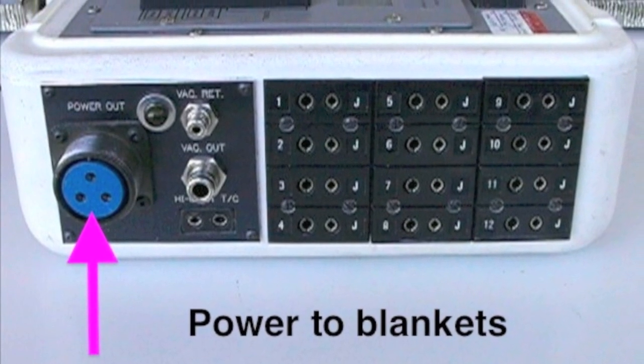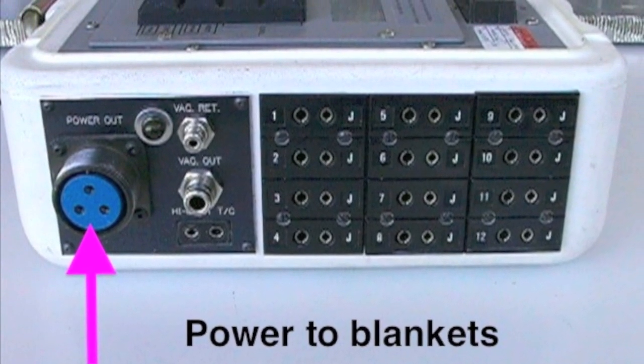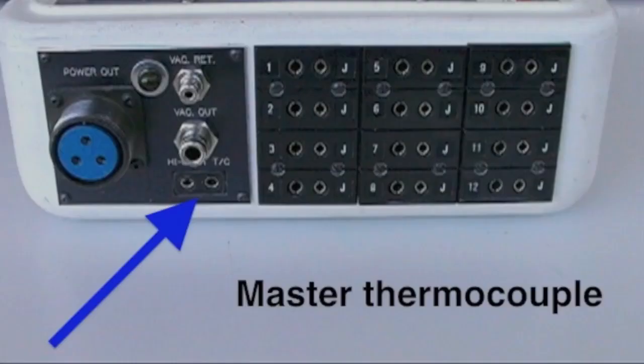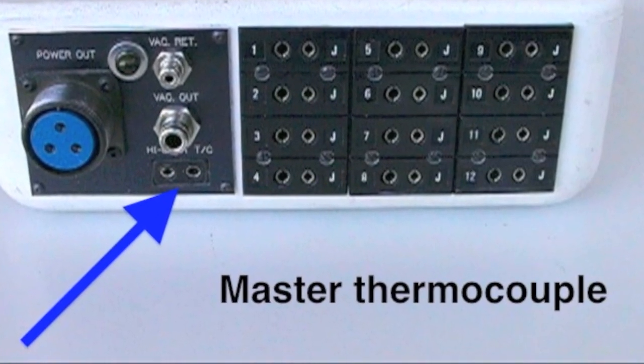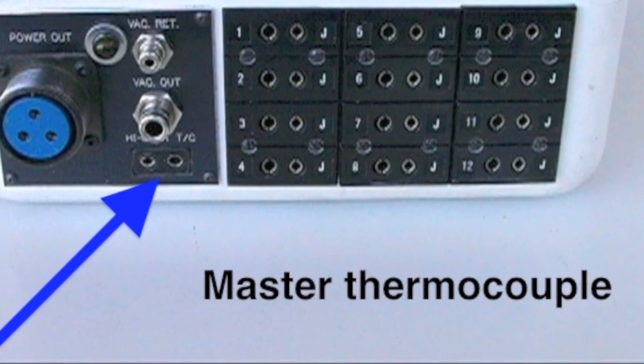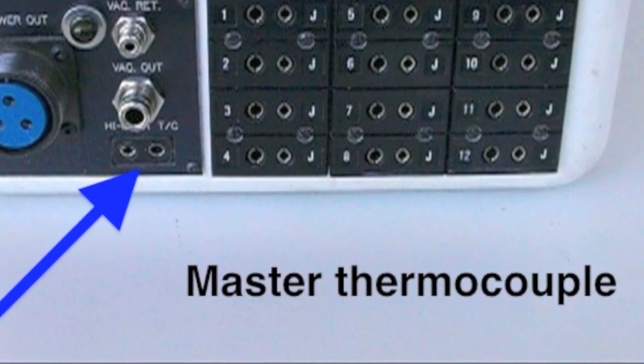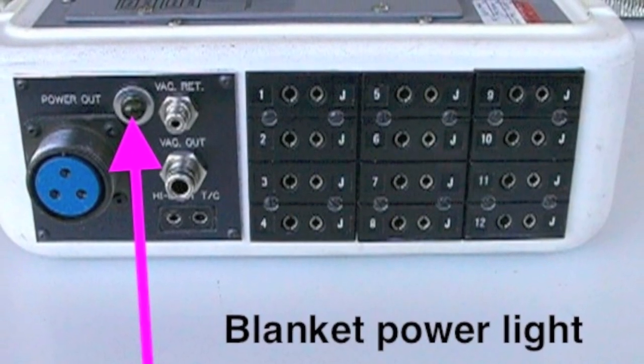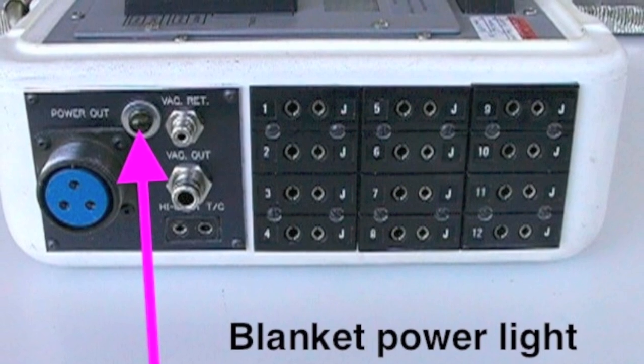Connect the splitter to this cannon plug and connect a blanket to the splitter. Ensure there is a thermocouple plugged into the master location. The heat blanket power light will flash when electricity is flowing.